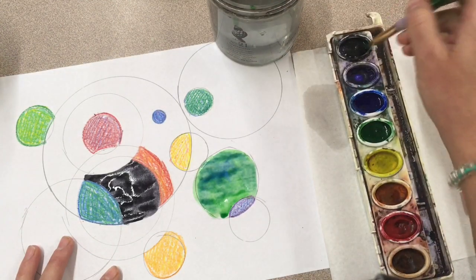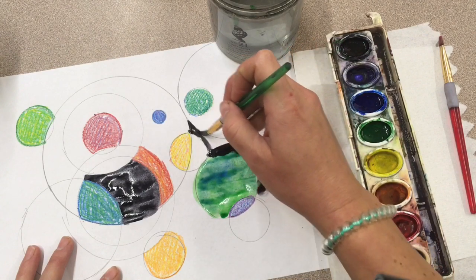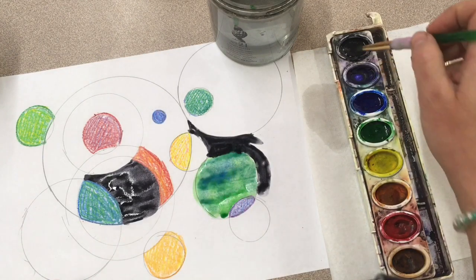Just remember that if you put two wet colors next to each other, they will start to mix together, so my black and my blue green are going to mix.